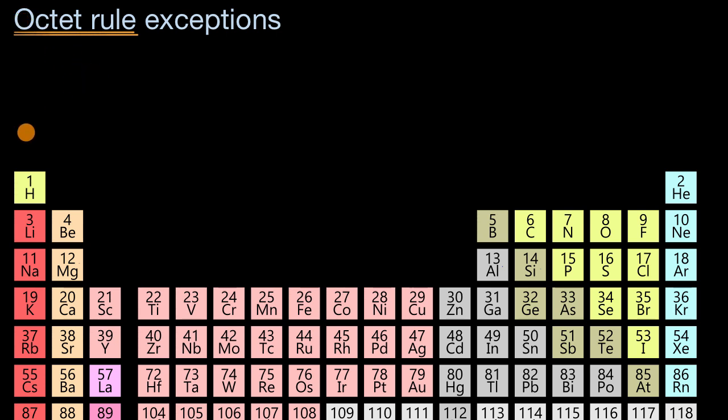We've already talked about some exceptions, things like hydrogen. Its outer shell is that first shell which gets full with two electrons, so it's trying to get to that duet rule. But as we'll see, there are other exceptions.